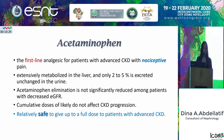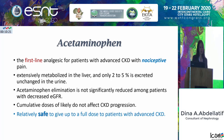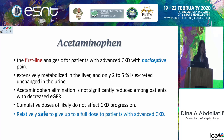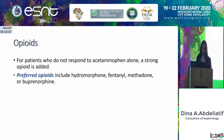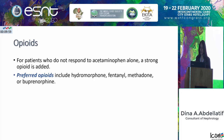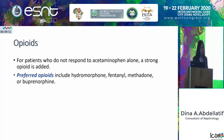Acetaminophen is the first-line analgesia, especially for nociceptive pain types. It is extensively metabolized in the liver, and cumulative doses are not likely to affect CKD progression, so it is considered relatively safe to give at full dose to patients with advanced chronic kidney disease. For patients who do not respond to acetaminophen alone, a strong opioid is added, with preferred opioids being hydromorphone, fentanyl, methadone, and buprenorphine.